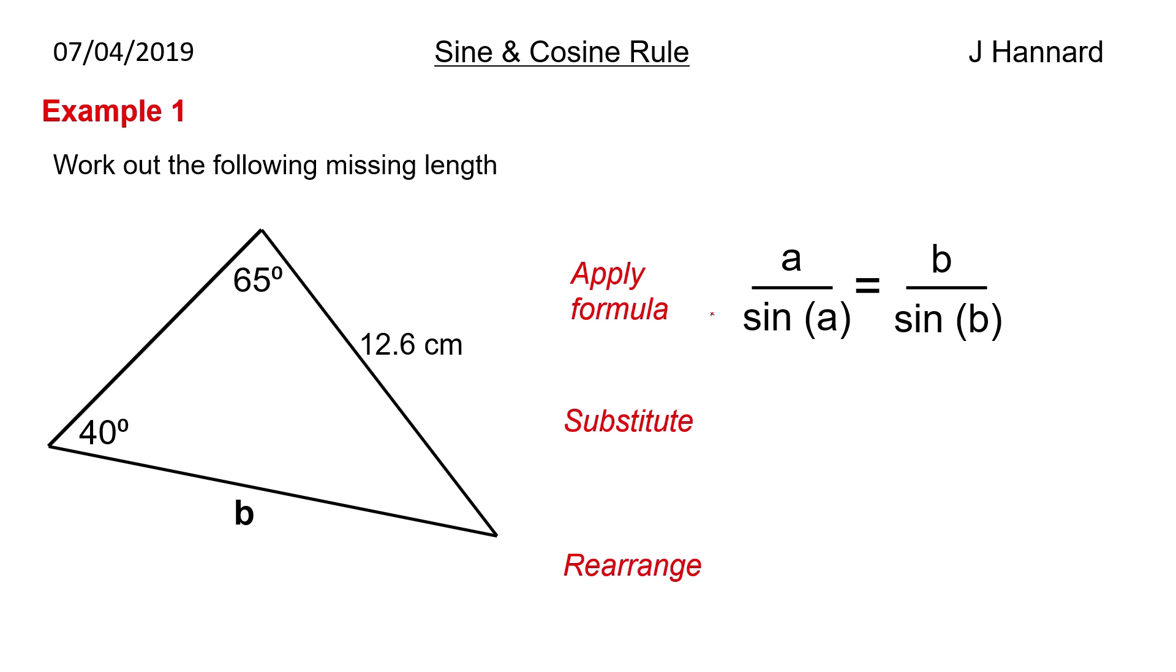Example one. Work out the following missing length. So we've got a little triangle there, we've got two angles, we've got a length and we want to work out b. So we apply the formula a over sine a equals b over sine b. Substitute the numbers in, we've got 12.6 over sine 40. Remember opposites attract in terms of sine and cosine rule and that equals b over sine b which is 65.